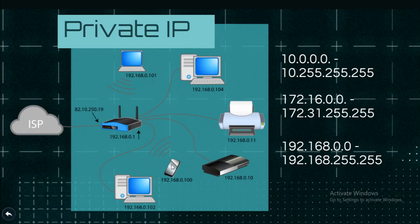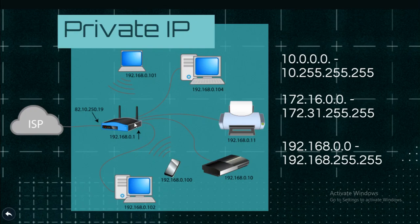There is an IP for a laptop, and you can assign an IP to a printer as well. When you install the router, the first time you connect with a username and password, your private IP is assigned automatically. If you look at the router, it is a gateway.